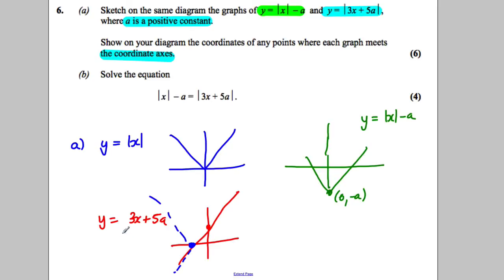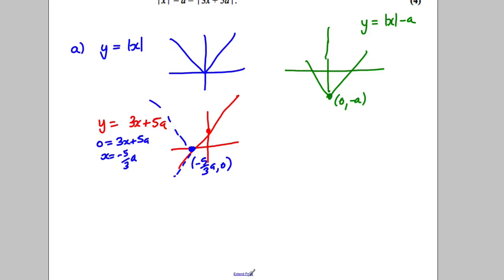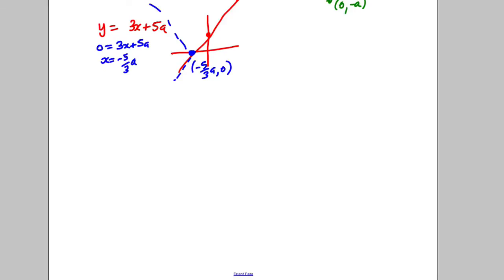This point where y equals 0: solving 0 equals 3x add 5a gives x equals negative 5 thirds a. So the x-intercept before the flip is at (negative 5a/3, 0). Now let's draw both graphs in one picture.